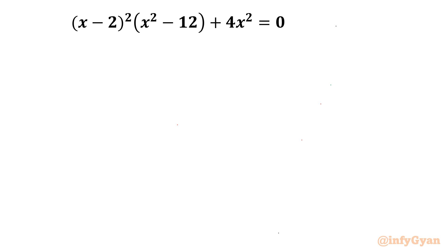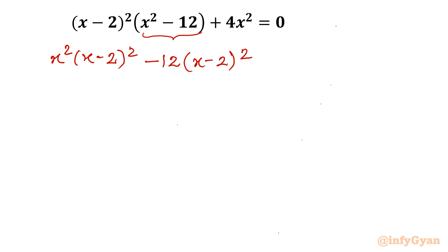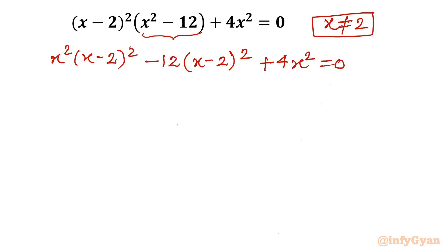I will expand this bracket. So I can write x squared times (x minus 2) whole square minus 12 times (x minus 2) whole square plus 4x squared equal to 0. Now I will divide this equation by (x minus 2) whole square. First we have to make sure that x=2 should not be a solution of the original equation. Putting x=2: the first term on the left-hand side gives 16 and the right-hand side is 0, so x is not equal to 2. Therefore we can divide by (x minus 2) whole square.